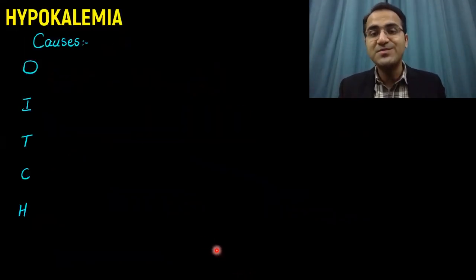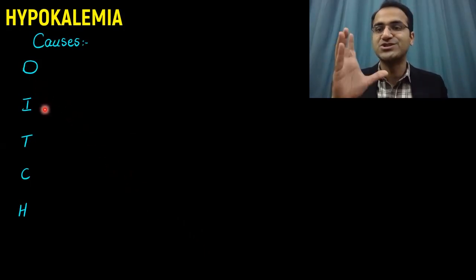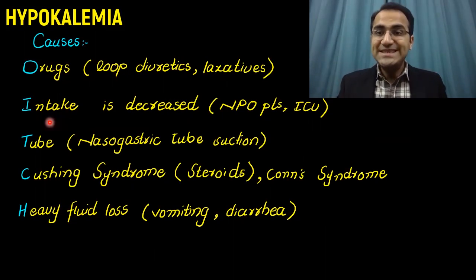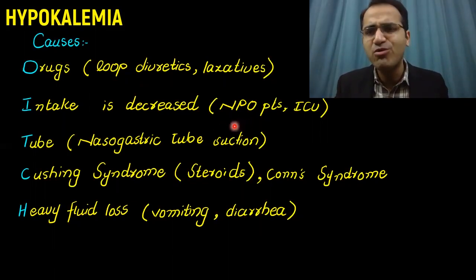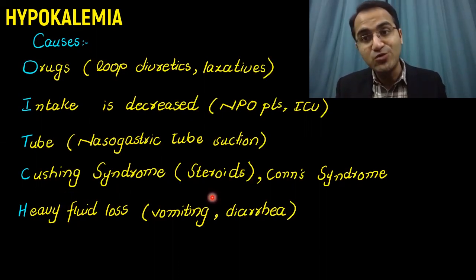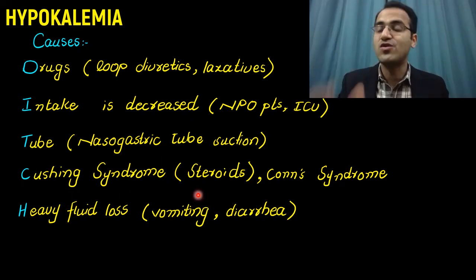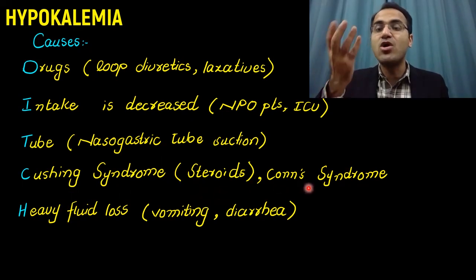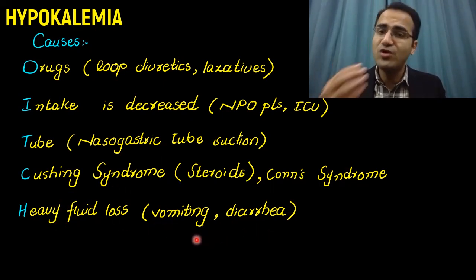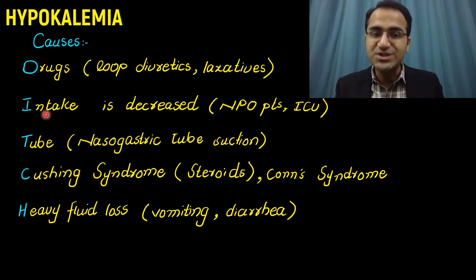The causes of hypokalemia can be remembered by the mnemonic DITCH potassium. D for drugs like loop diuretics and laxatives, which cause loss of potassium. I for decreased intake — many surgical patients who are nil per oral develop hypokalemia due to dietary deficiency. T for tube, like nasogastric tube suction. C for Cushing syndrome, where excess steroid causes potassium loss through mineralocorticoid activity. H for hyperaldosteronism, as in Conn's syndrome, which causes potassium loss in urine. Heavy fluid loss from vomiting and diarrhea also causes loss of electrolytes including potassium.